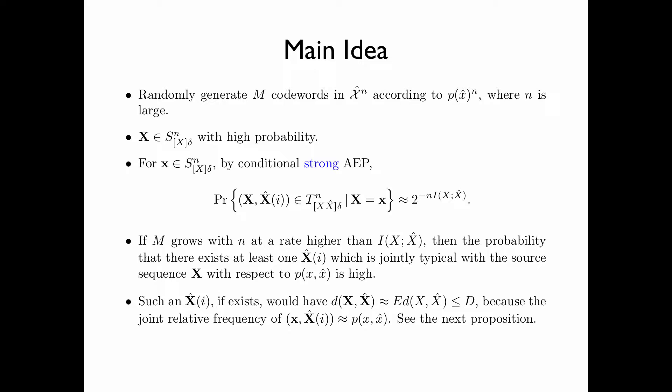In other words, if the source sequence and the codeword are jointly typical, then the distortion of the codeword is approximately equal to the expected distortion between the random variable x and x̂. This will be formally justified in the next proposition. We then use this codeword to represent the source sequence x to satisfy the distortion constraint, because the expected distortion between x and x̂ is less than or equal to d.